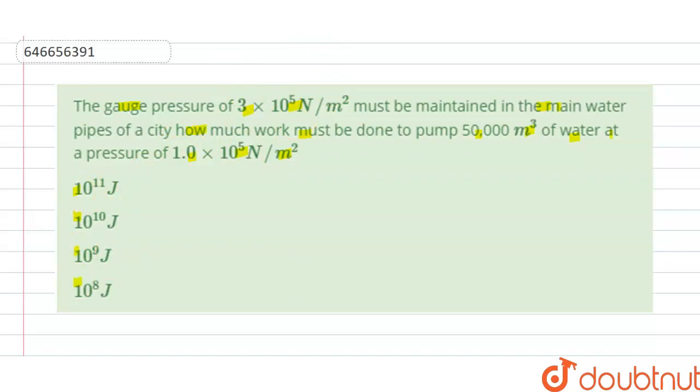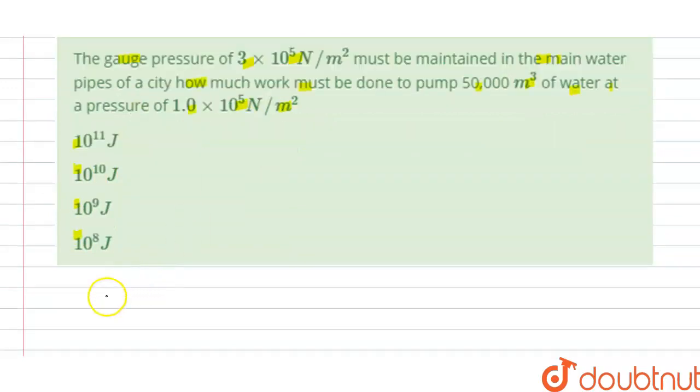We have to find the correct option. The solution: we know that work done to pump the water is the same as the work done due to the pressure. So we can write here: work done due to pressure